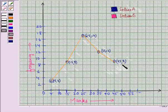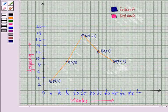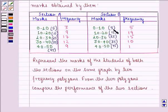Now we will find the frequency polygon for section B. So let us plot the points for section B. And they will be (5, 5), (15, 19), (25, 15), (35, 10) and (45, 1). So let us plot these points now.